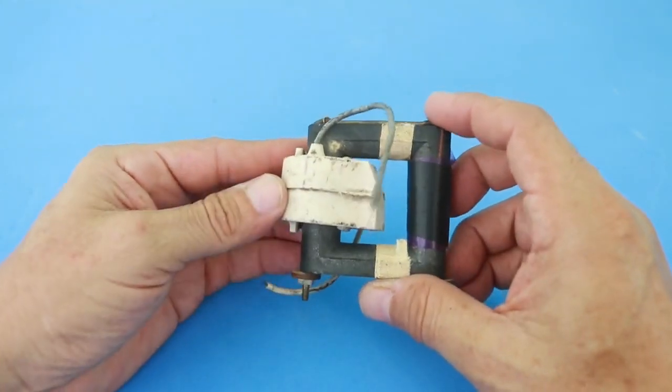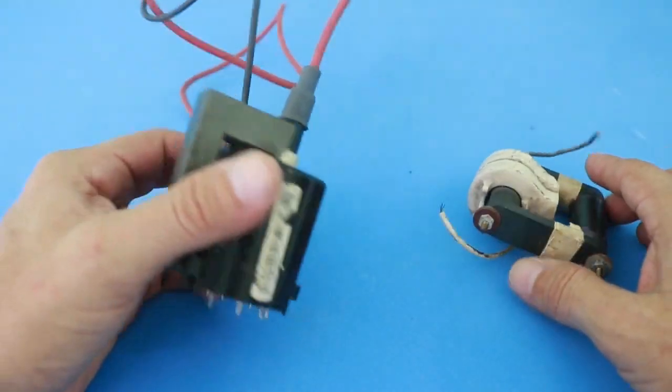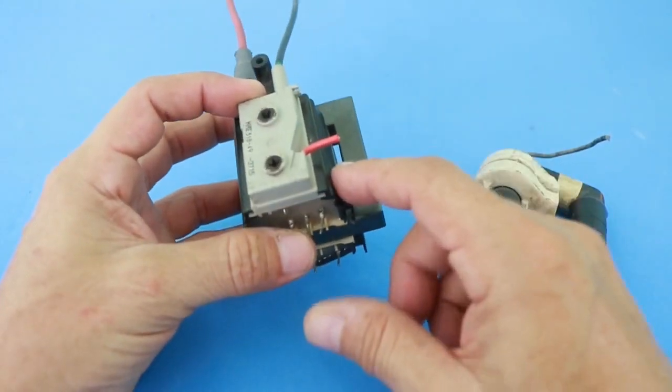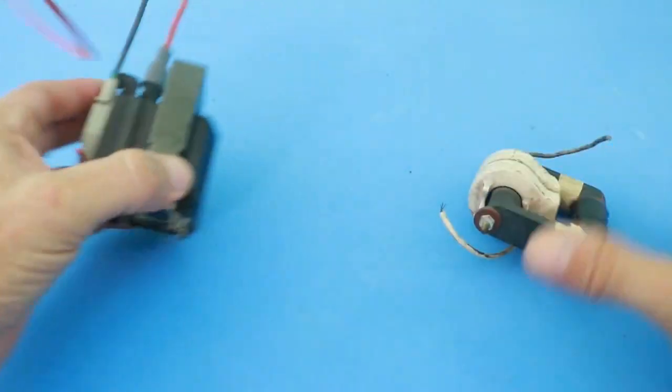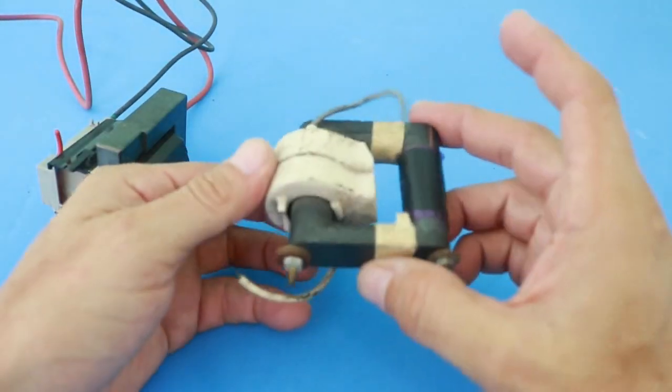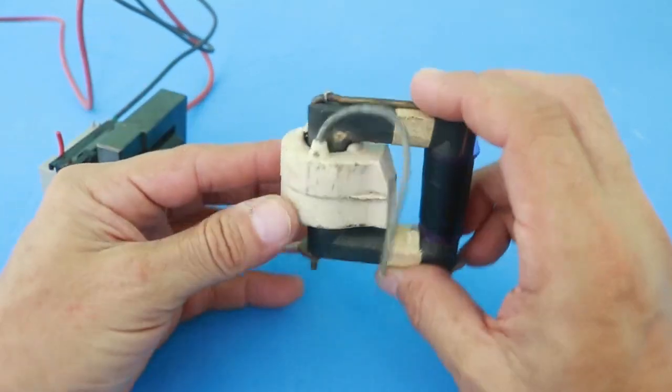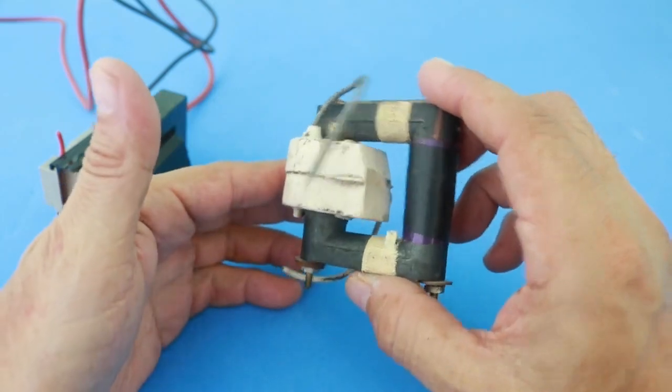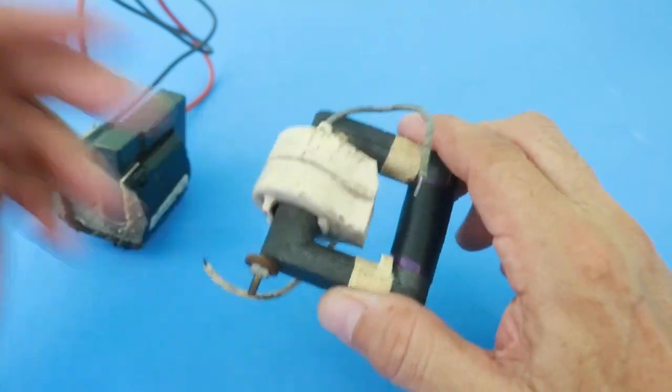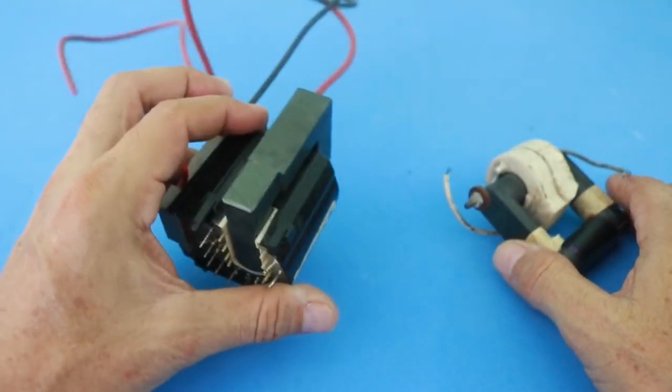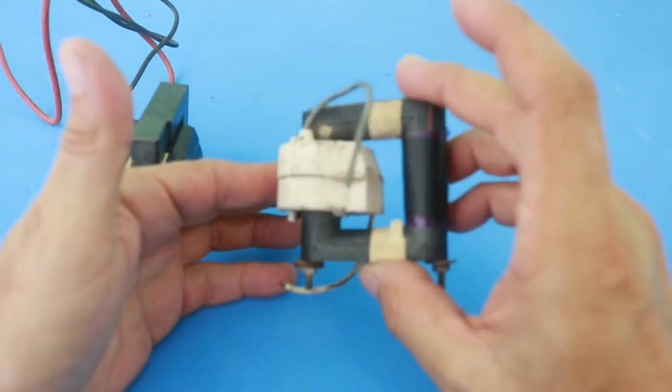The difference between these old flybacks and more modern ones such as this one is that this kind of flyback produces DC high voltage and the older types such as this produce alternating current. Having high voltage alternating current is useful for some kind of experiments, for example the plasma ball, which cannot be done with high voltage DC. Therefore I will try to put this flyback to work.